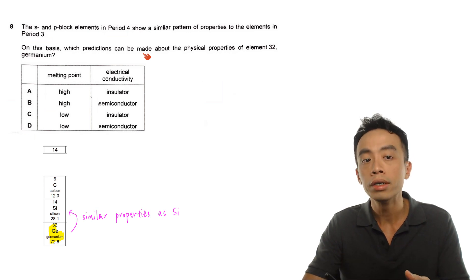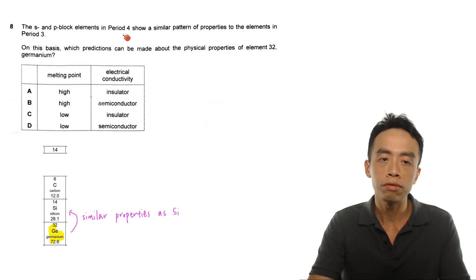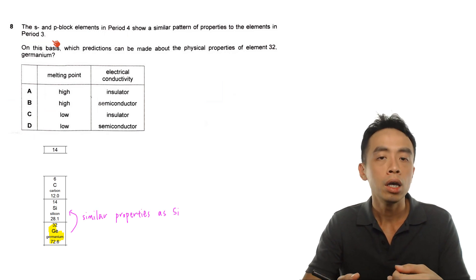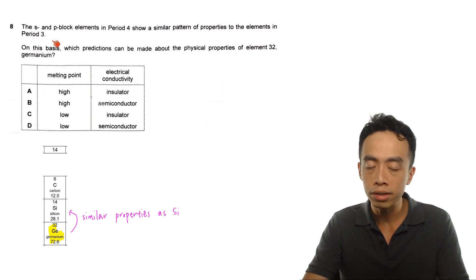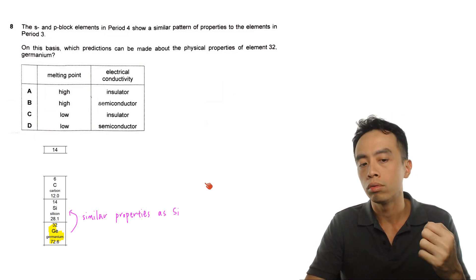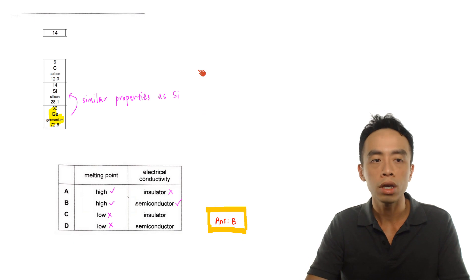Since period 4 elements and period 3 elements have similar properties, I'll just apply whatever I've learned for period 3 elements to period 4. So effectively, what we're doing is learning the property for silicon under periodicity.